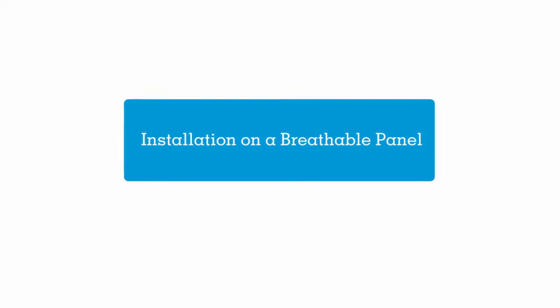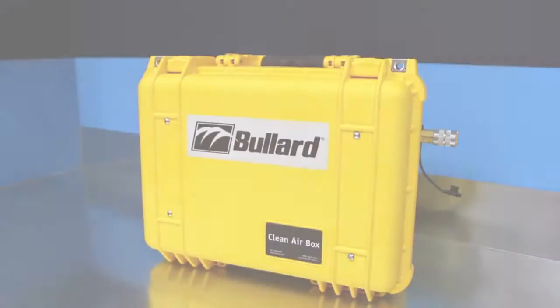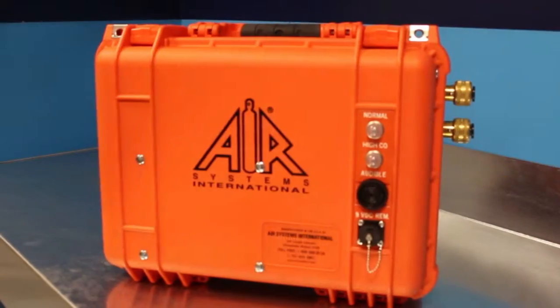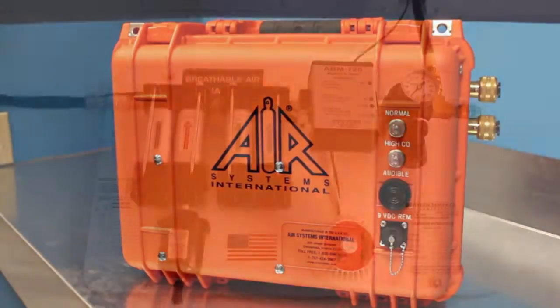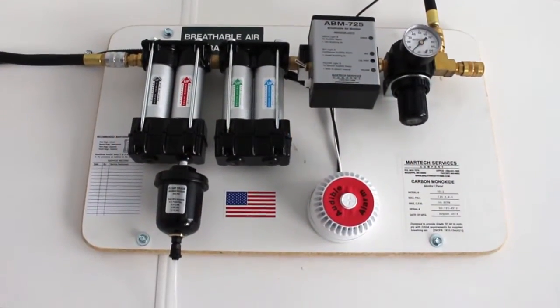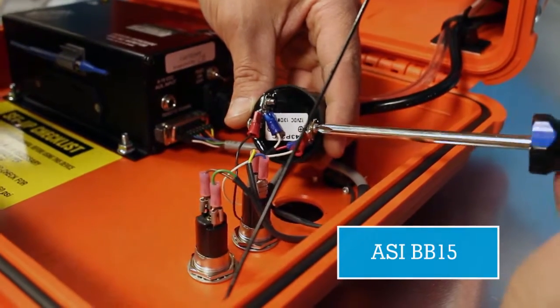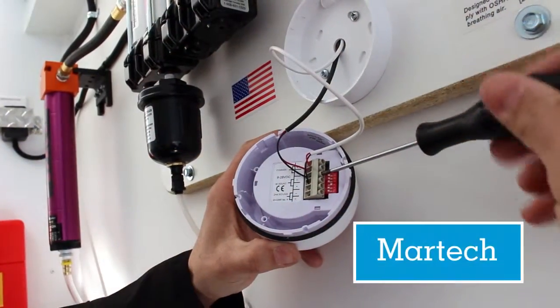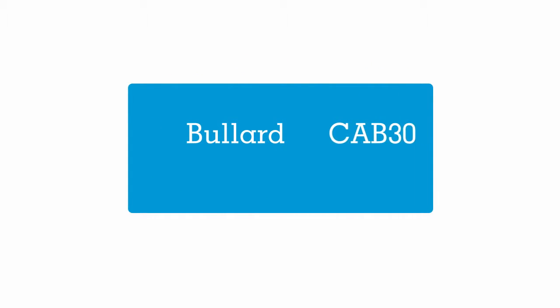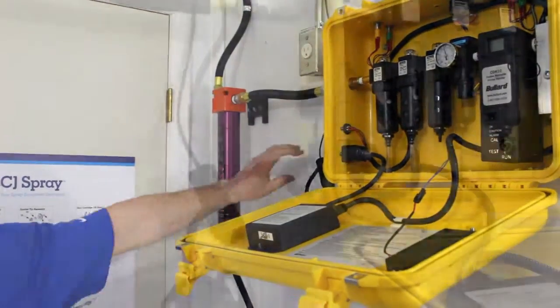Interfacing the RAS with breathable panels can be as simple as a plug or inserting two wires into a terminal strip. For the Bullard Cab 15, ASI-BB15, and Martech, the RAS leads are manually installed — simply connect the wires to the terminal. For the Bullard Cab 30, ASI-BB30, and larger units, a serial-style connector is available.